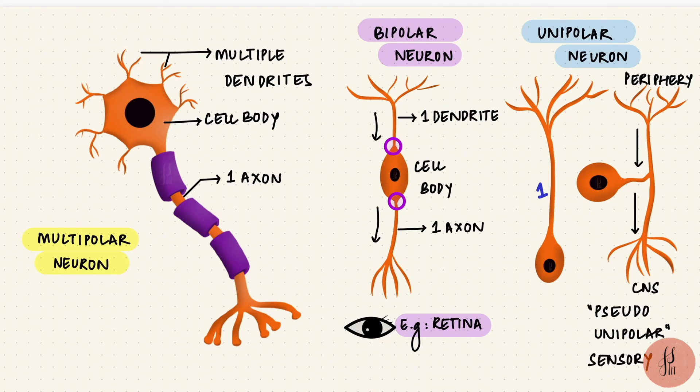Again, these are sensory, for things like proprioception, and those cell bodies are in the dorsal root ganglia.